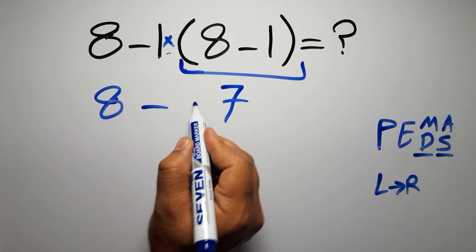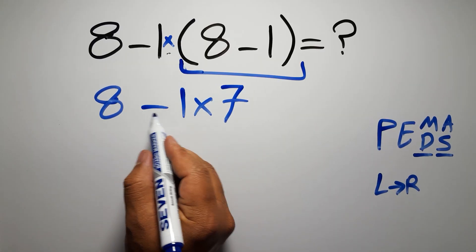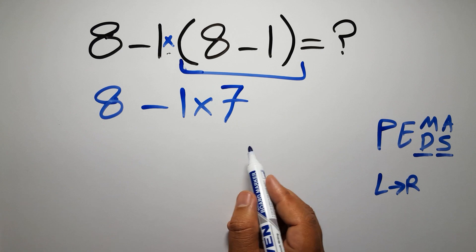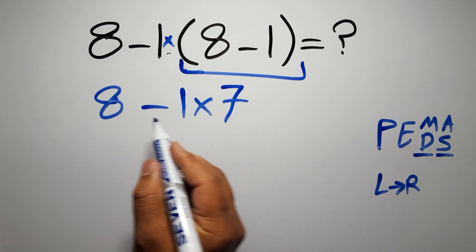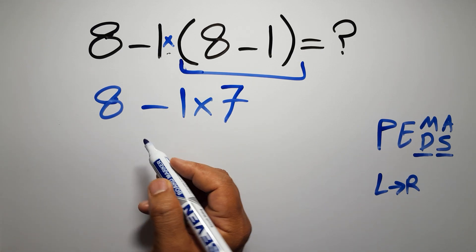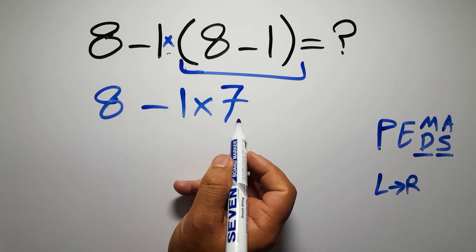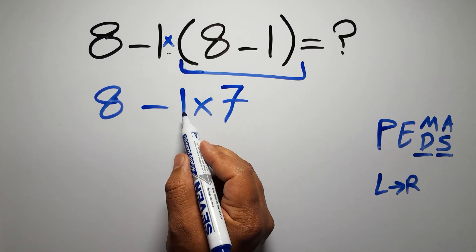Now we have one subtraction and one multiplication. According to PEMDAS, multiplication has higher priority than subtraction because in PEMDAS multiplication comes before subtraction. So here first we have to do this multiplication: 1 times 7 gives us 7.